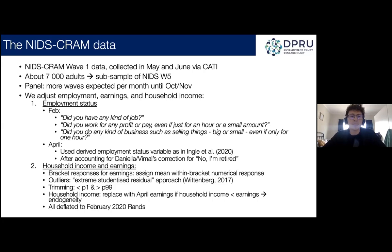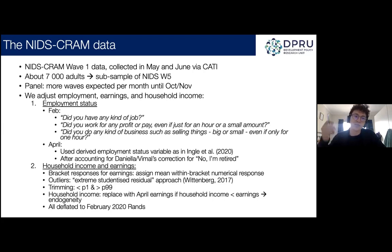We reached a broad consensus on not relying on reports of working hours or earnings, and instead using responses to three questions for both February and April: Did you have any kind of paid job? Did you work for any profit or pay? And did you do any kind of business? The labour market questions were asked retrospectively — people surveyed in May and June were asked about their employment status in February as a pre-lockdown benchmark, and then about equivalent outcomes in April, the first month of lockdown.